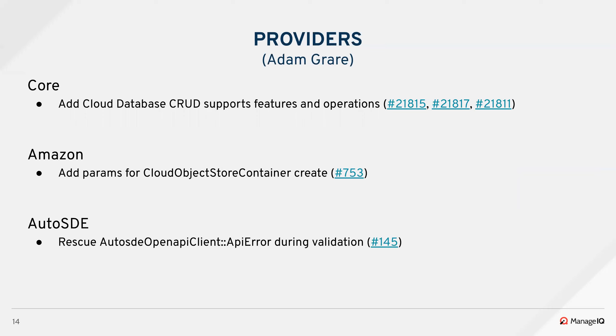Thanks, Kavya. This sprint, Nasser added the CRUD operations methods to core for cloud databases — there's a default supports-not for create, update, delete and all the associated queue and raw methods for the base cloud and database models. For Amazon, Gilbert added params for create for the cloud object store container and fixed an issue where supports-create was in the wrong place to match the behavior of OpenStack. For AutoSDE, they added a rescue of a particular API error during validation to give a better descriptive error message when the user provides invalid credentials.